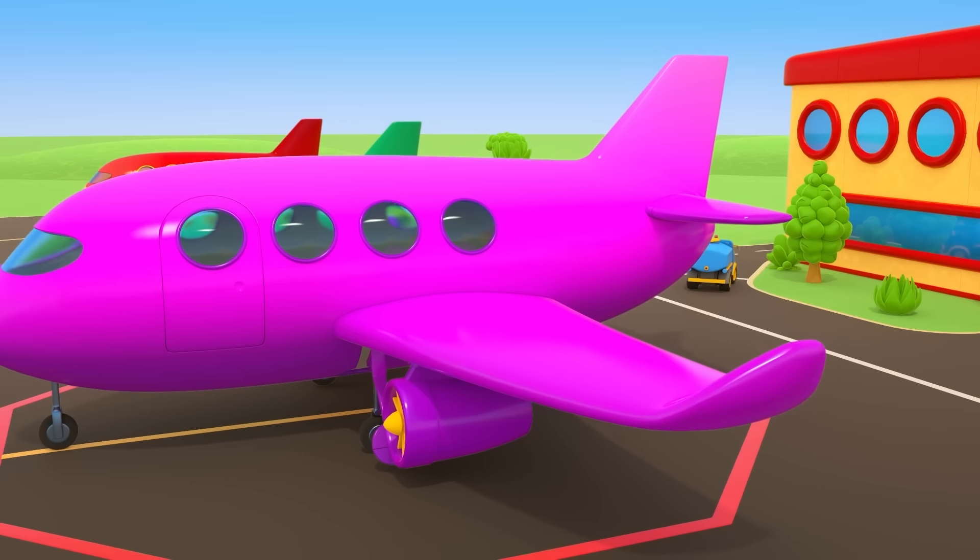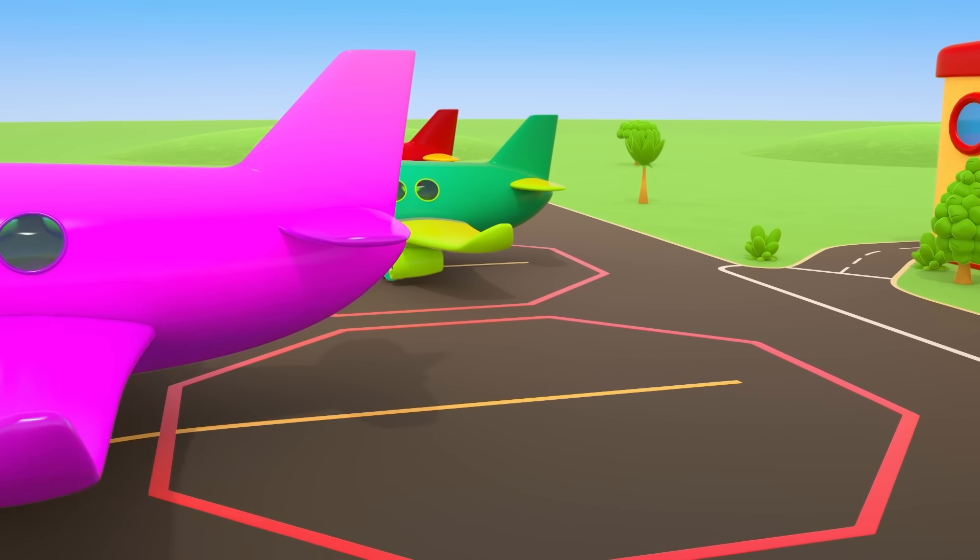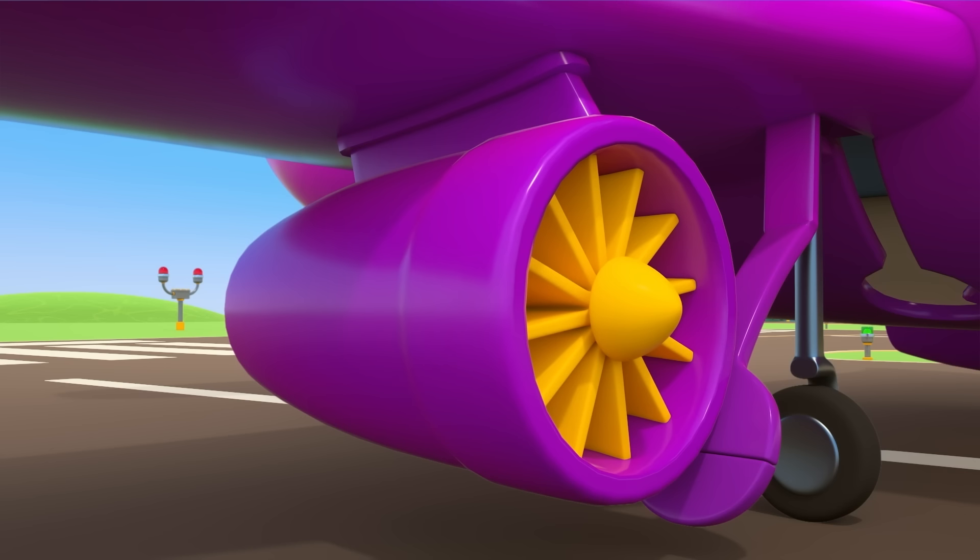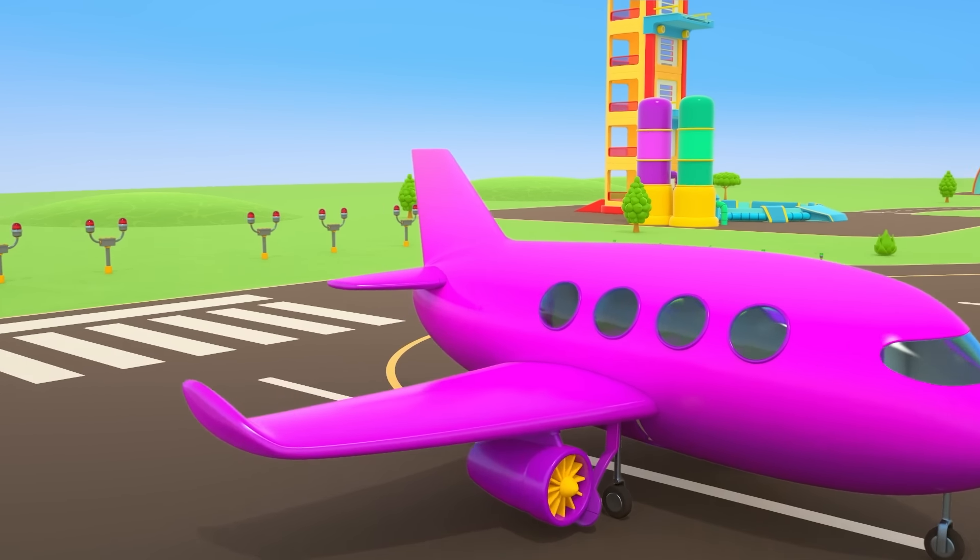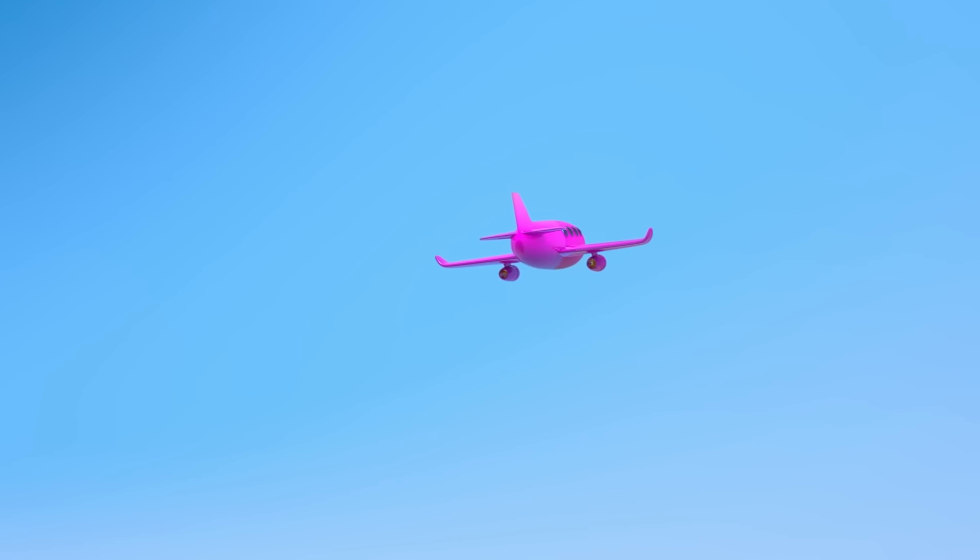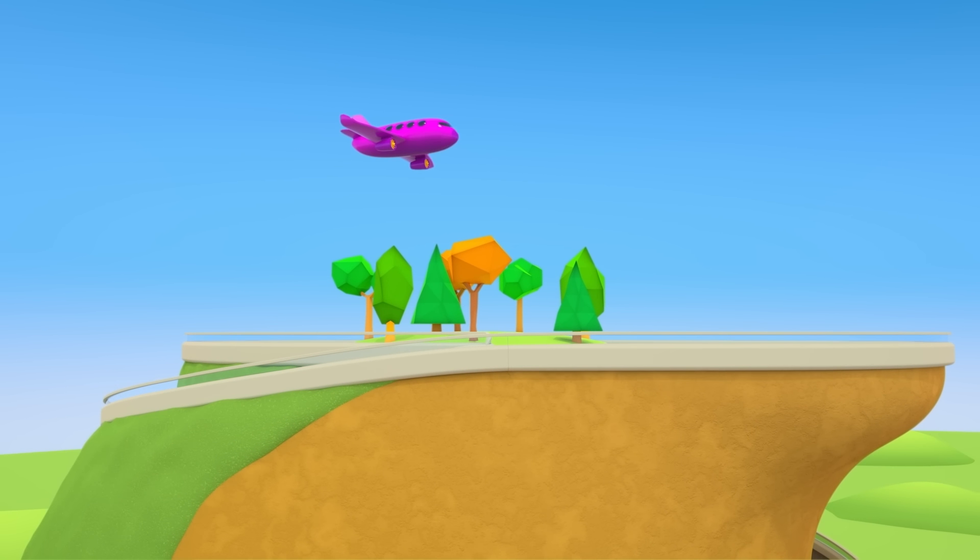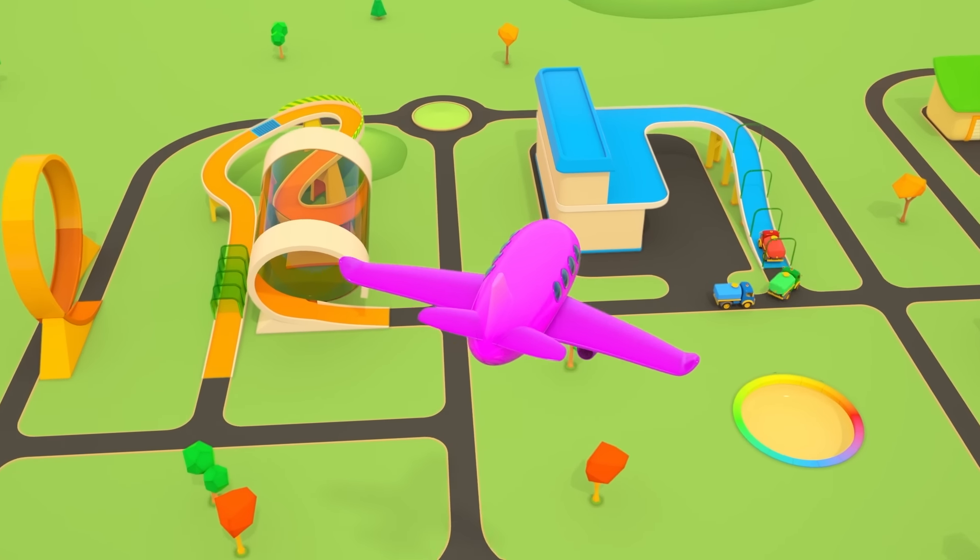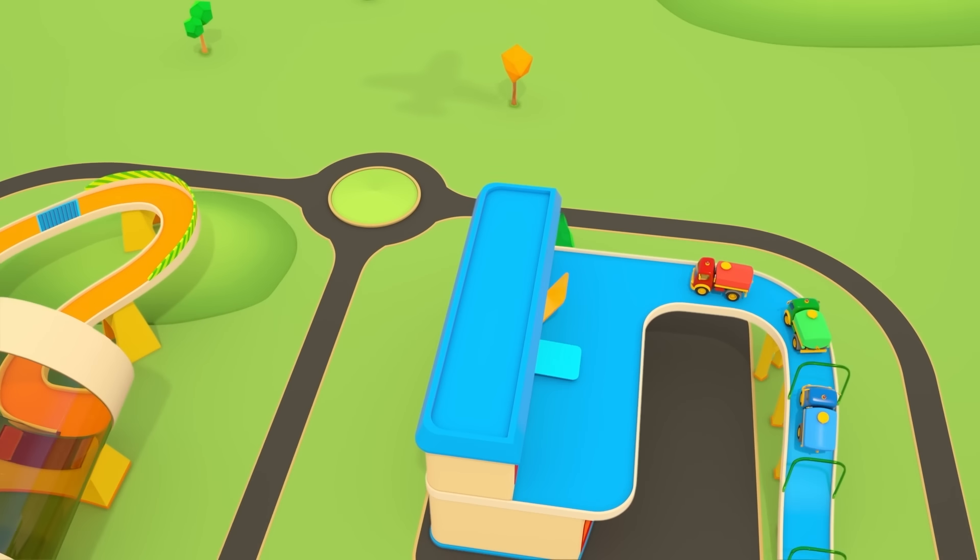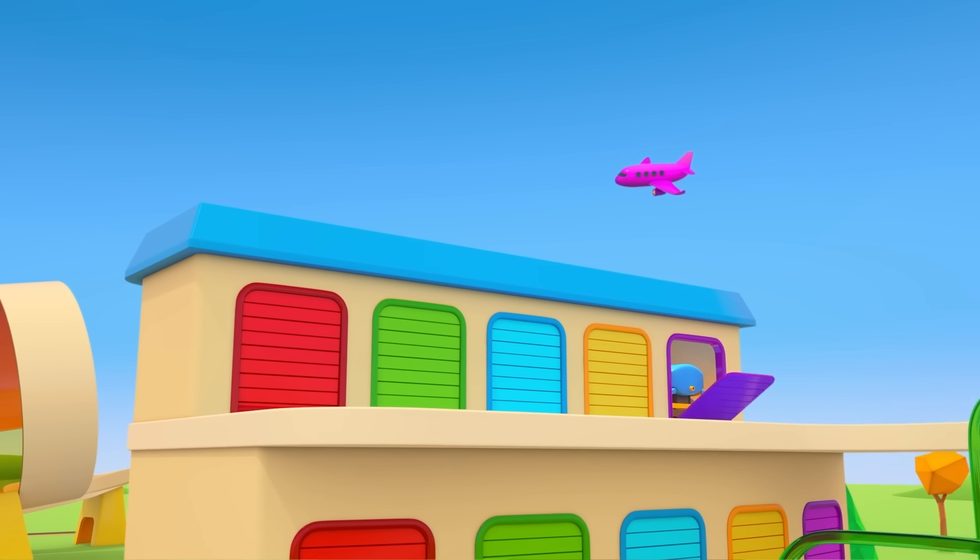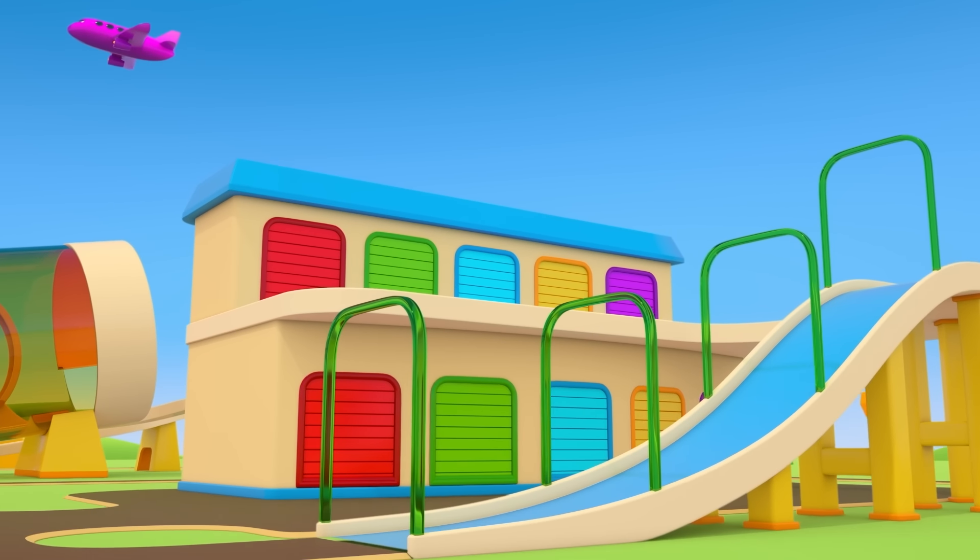Now the purple airplane can take off. It taxis out onto the runway. It accelerates, and off it goes. The fuel trucks have done excellent work. They're heading back to the garage. Until next time, helper cars.